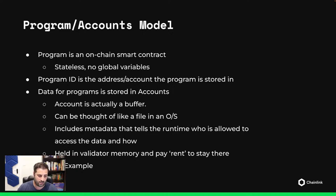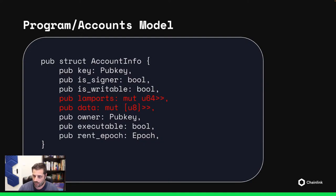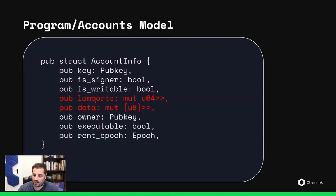If you have any questions, feel free to ask in the chat. Here's what an account actually looks like — it's basically just a bunch of metadata. You've got a data field, which is a byte array, lamports indicating how much SOL the account holds, and other metadata like the public key, whether it's writable, who owns it, and whether it's executable.